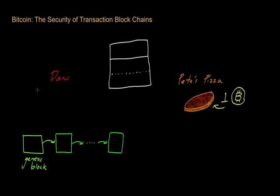What I would like to do is describe an imaginary Bitcoin transaction and then talk about how somebody might try to game or defraud the system, and why that's not only mathematically hard to do, but why there's actually an economic incentive in the Bitcoin system for different people to behave honestly.